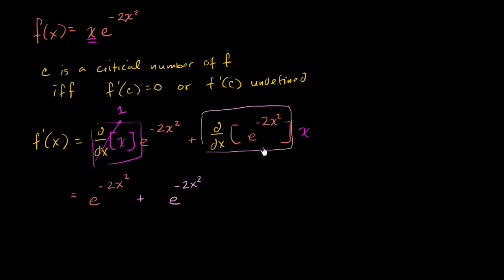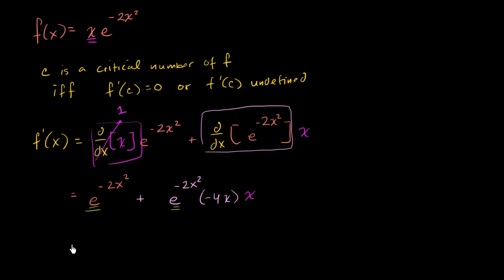We multiply that times the derivative of negative 2x squared with respect to x, which is negative 4x. So times negative 4x, and of course we have that x factor as well. Both terms have e to the negative 2x squared, so factoring that out in green, we get e to the negative 2x squared times one minus 4x squared.